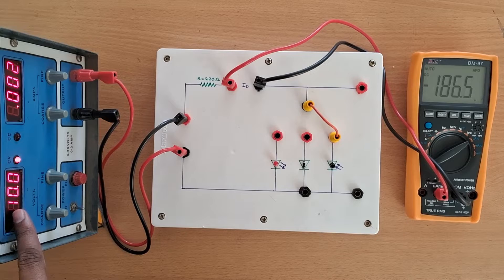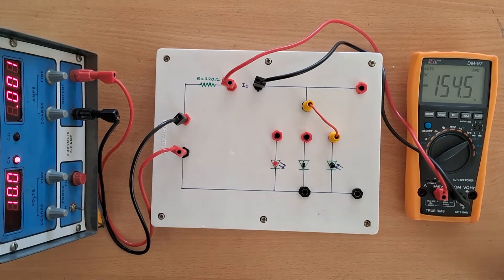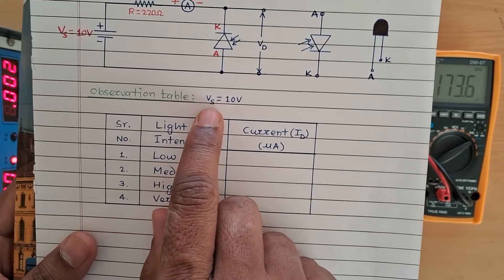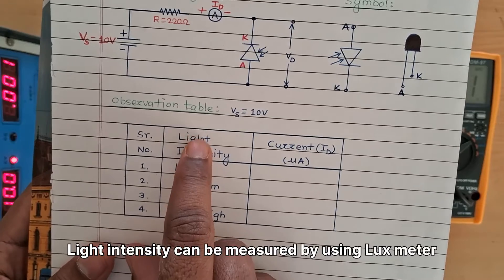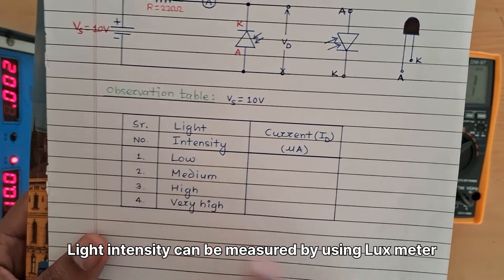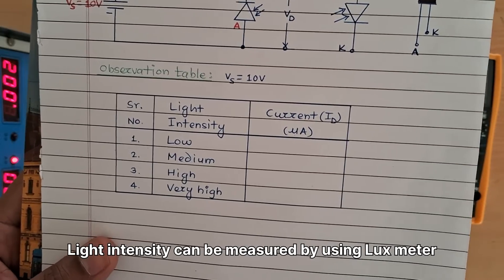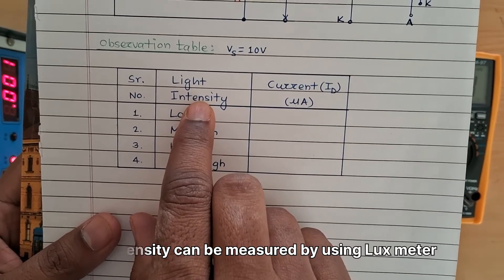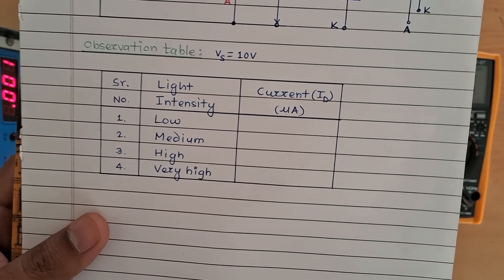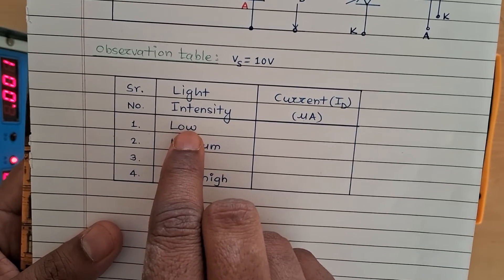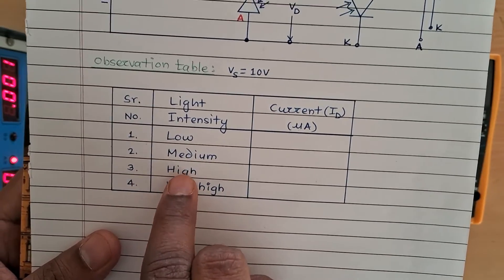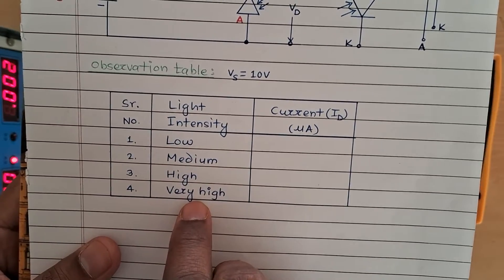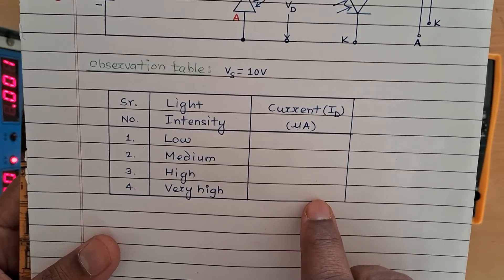I have set the power supply to a fixed 10 volts. From the observation table you can see that our supply voltage is 10 volts and we are varying the intensity of light. For measuring the intensity of light you can use a light intensity meter, also known as a lux meter, since intensity is measured in lux. We will record readings at low, medium, high, and very high intensity.